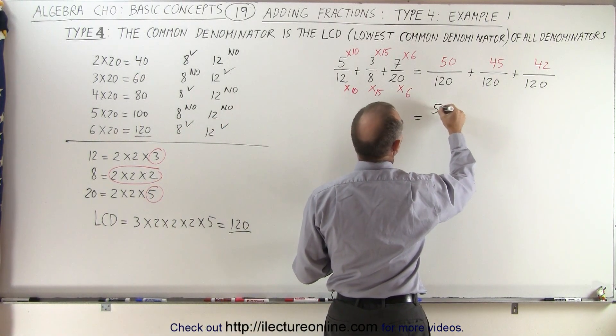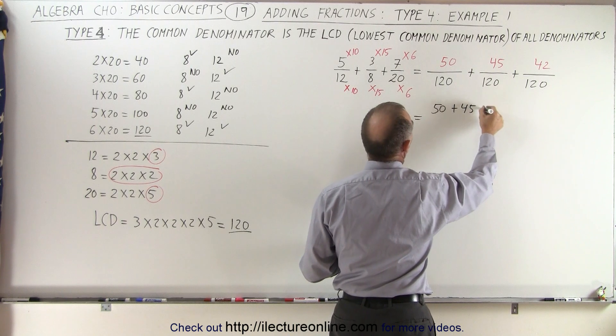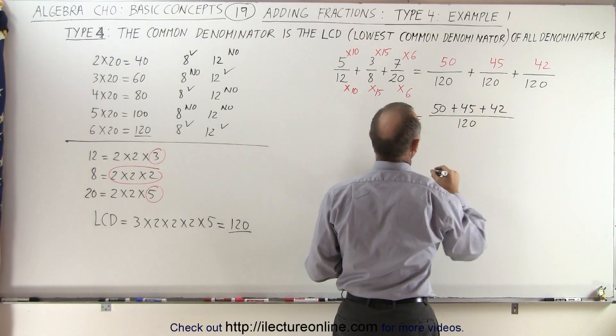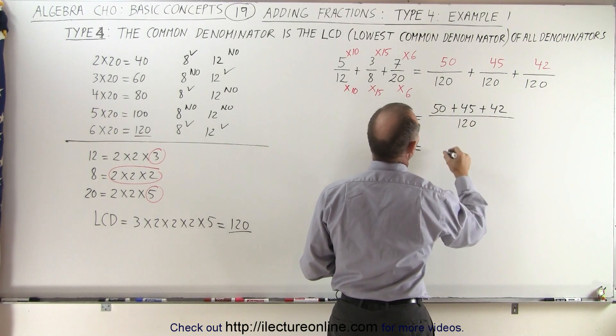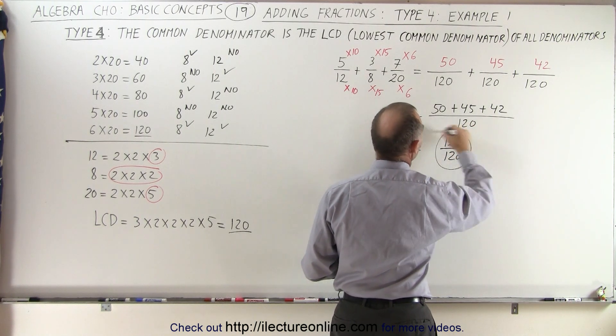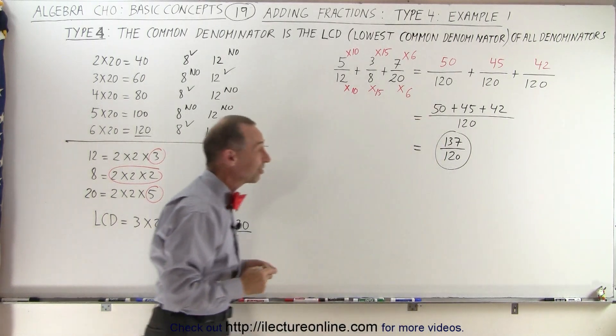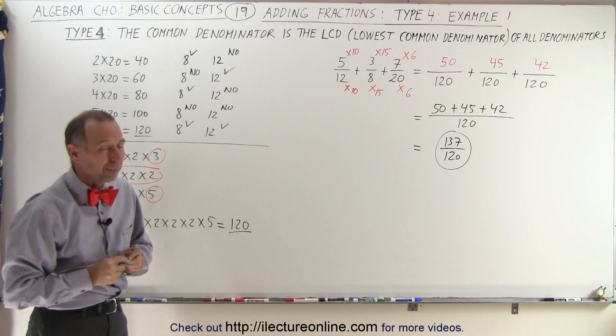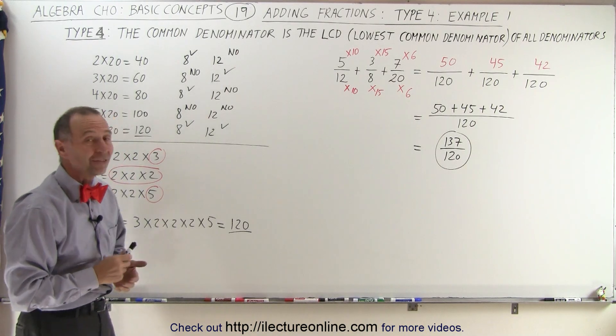So this is 50 plus 45 plus 42, all divided over the common denominator of 120, which is equal to 137 over 120. And that would then be the final answer. I don't think we can reduce that, because I think 137 is probably a prime number. And that's how it's done.